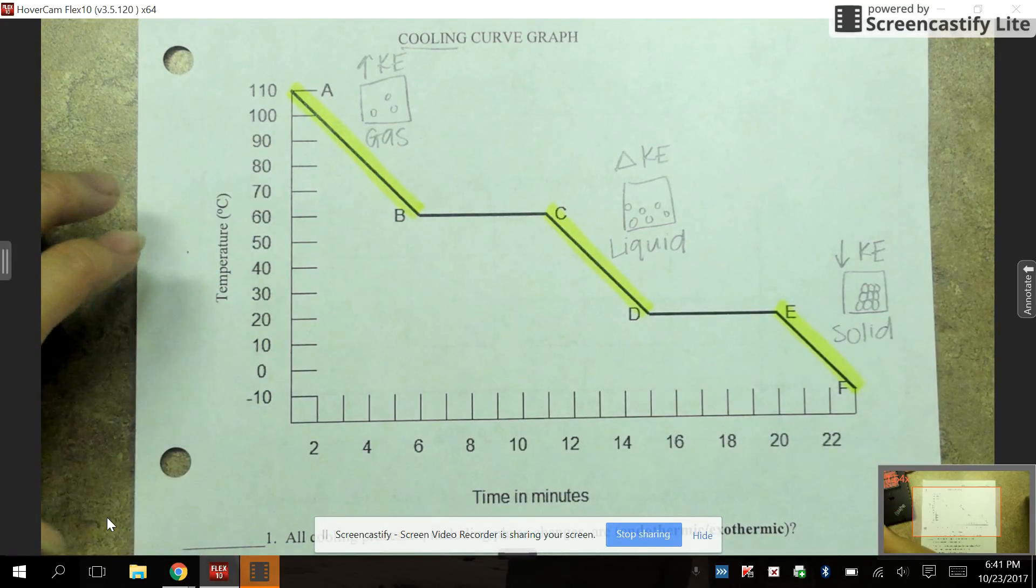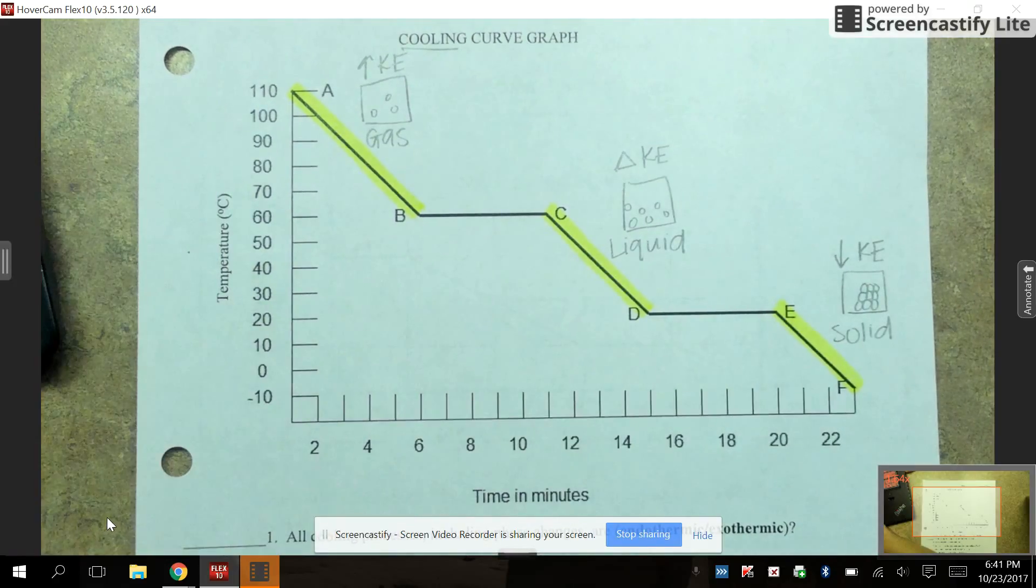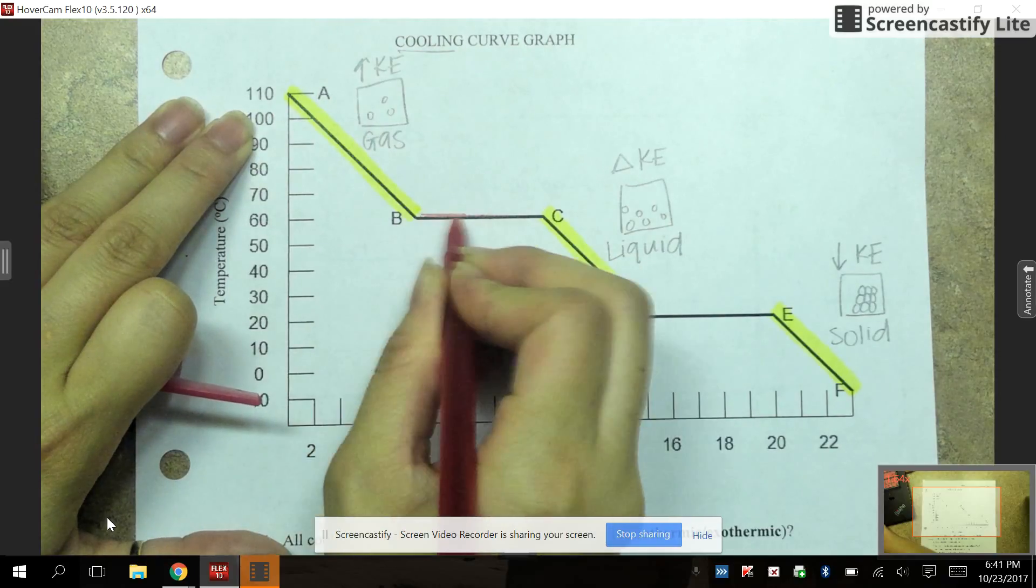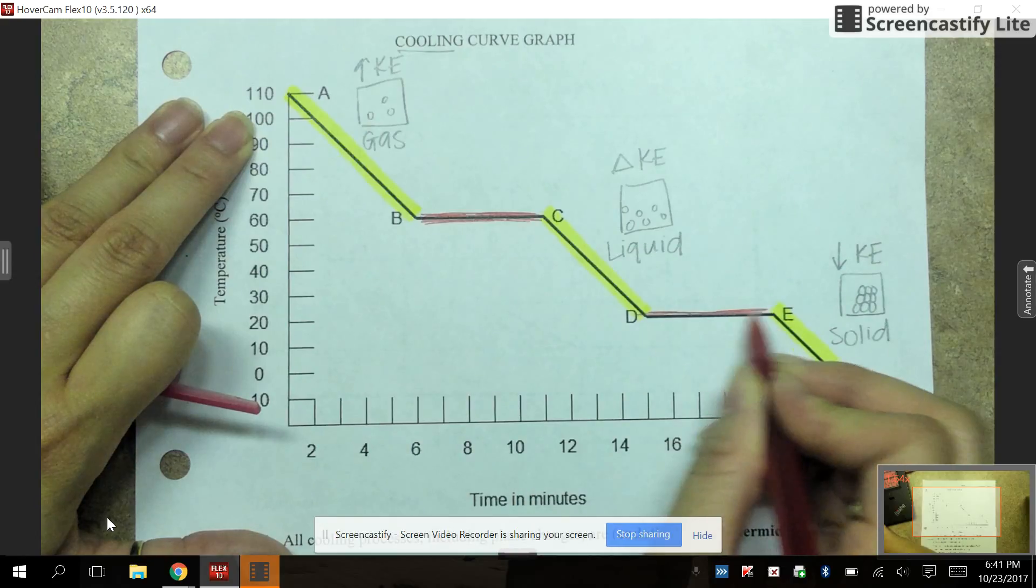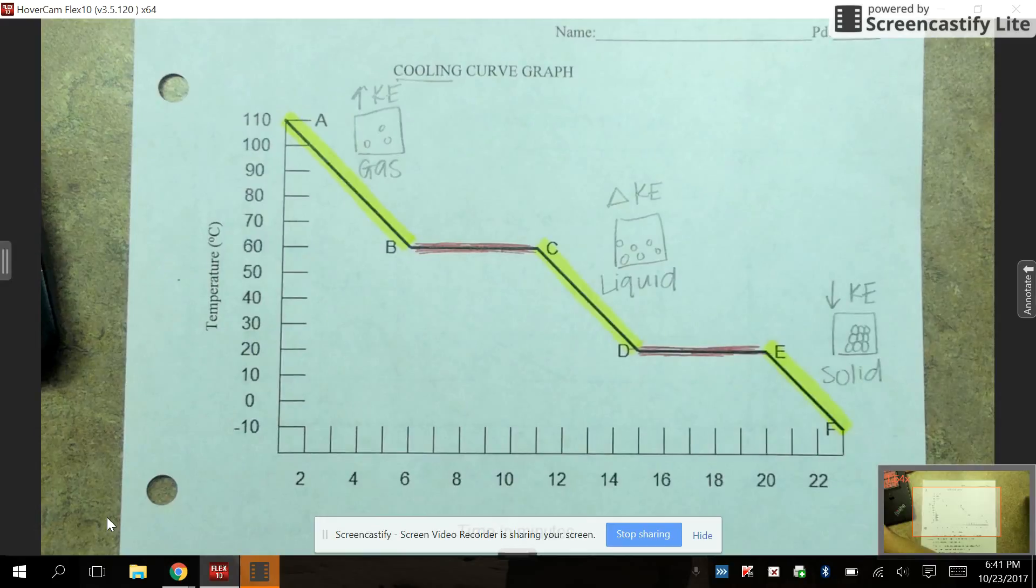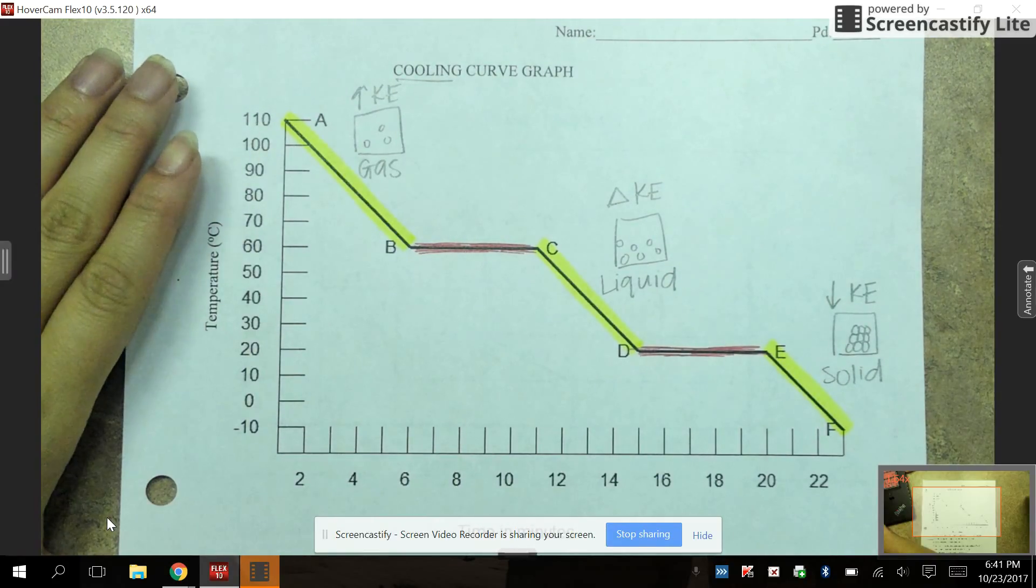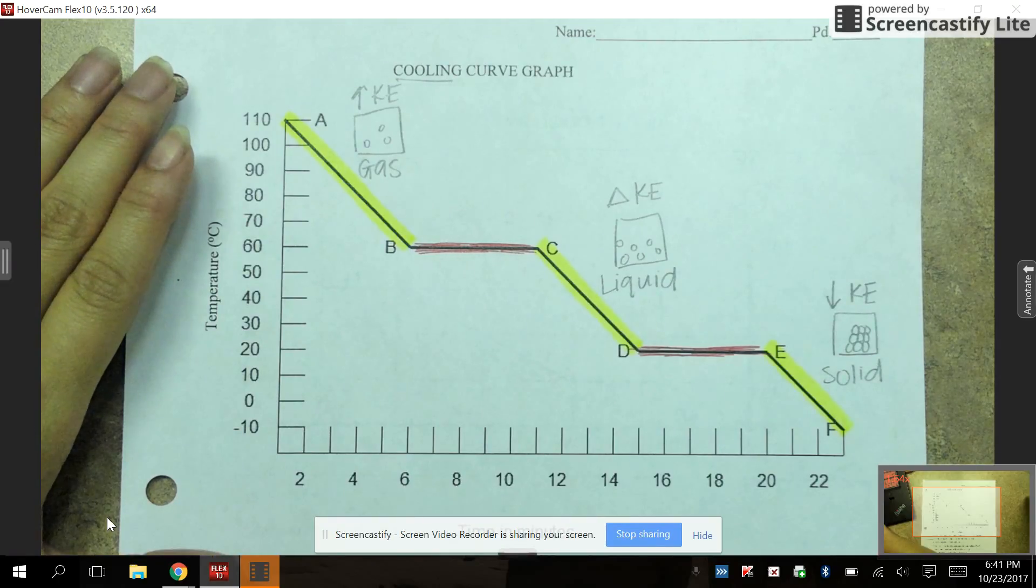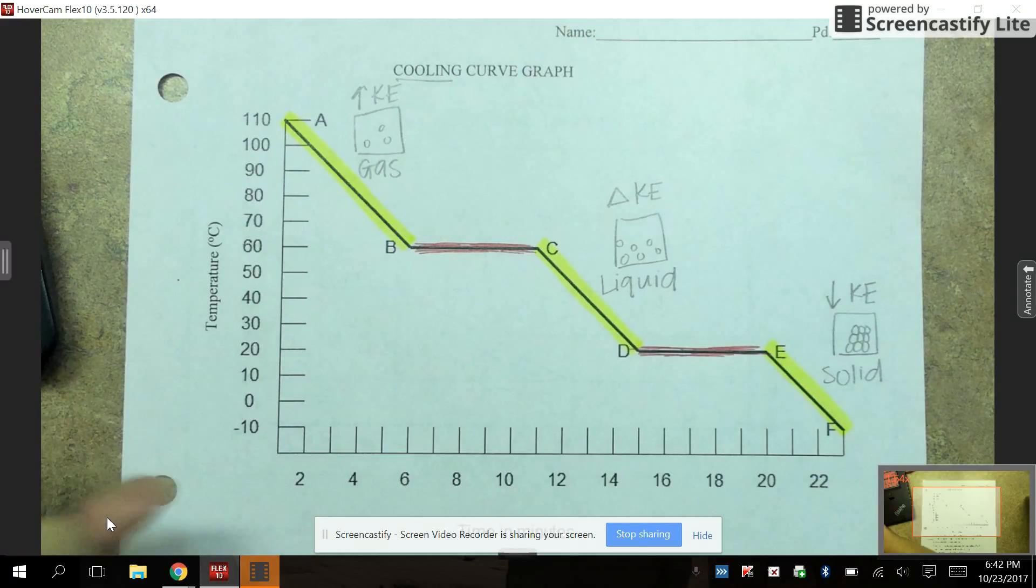The other thing you want to keep in mind with this cooling curve graph is what these flat lines represent. So I'm going to use a different color to symbolize these flat lines. So I'm going to take a moment to color them real quick. So these flat lines represent your phase changes. So things like melting, freezing, vaporization, condensation. What the heating and cooling curve does not show you is sublimation and deposition. So in my opinion, because they don't show you those things, this makes it an easier graph to interpret.